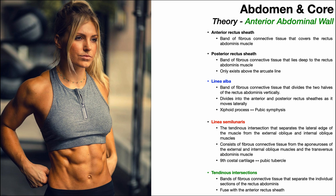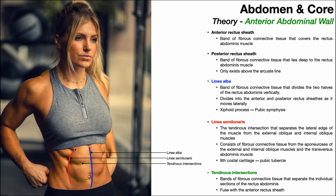For someone with a well-defined core, we can use a surface anatomy approach. Down the midline in blue would be the linea alba, separating the two halves of the rectus abdominis right from left. You can also see a couple of tendinous intersections separating the segments of the rectus abdominis. Laterally, you have the semilunar line or linea semilunaris, which exists on the lateral edge of the rectus abdominis and separates it from the external abdominal oblique and the internal oblique deep to it.